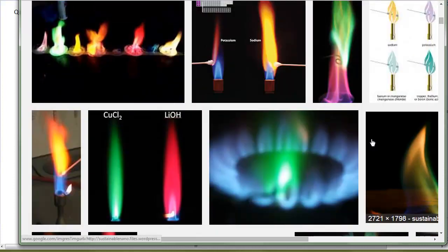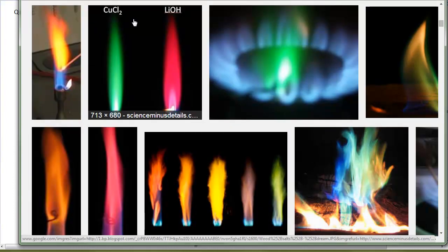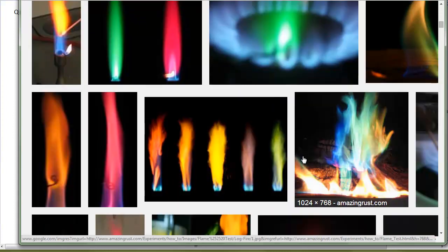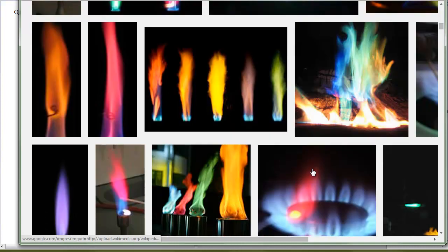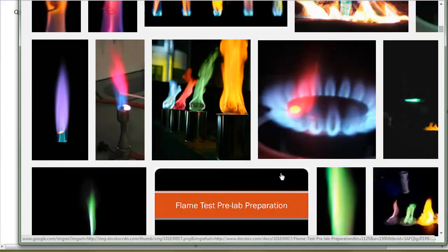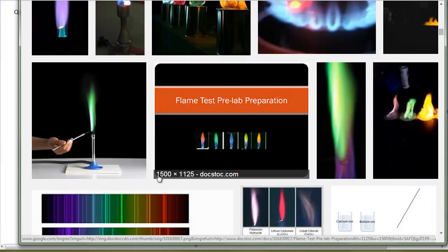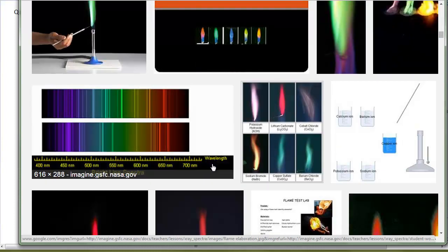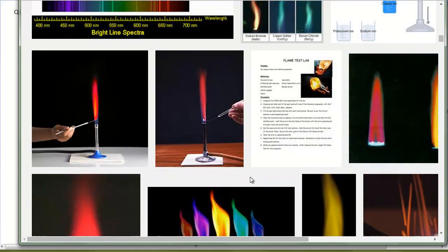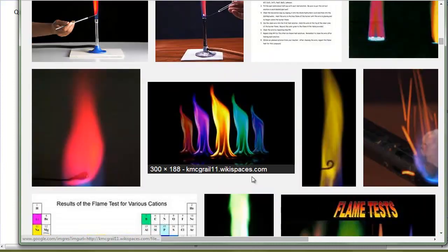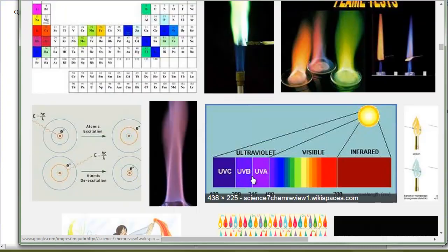We've known for a long time that if you put certain compounds in flames, recall from previous chapters that heat is a form of energy, so essentially we're giving these atoms or samples of substances energy, we see pretty colors. The pretty colors that we see are a type of electromagnetic radiation, a part of the electromagnetic radiation spectrum.